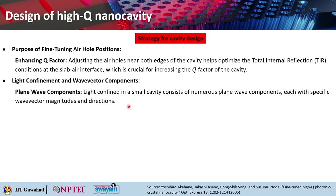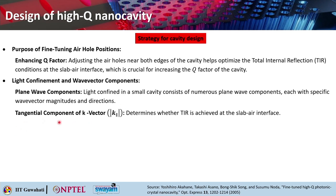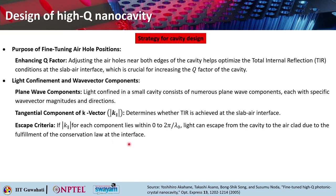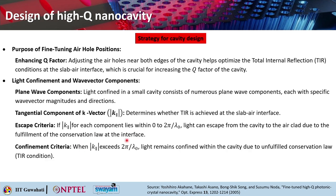Light confined in a small cavity consists of numerous plane wave components each with specific wave vector magnitudes and directions. The tangential component of the k-vector, k‖, determines whether total internal reflection is achieved at the slab-air interface. The escape criterion: if |k‖| lies between 0 and 2π/λ₀, light can escape from the cavity to the air cladding due to momentum conservation at the interface.